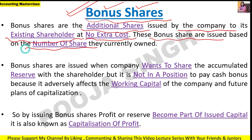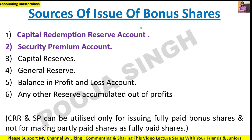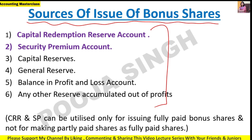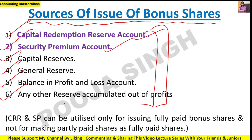This is about the number of shares. If you are a shareholder and the company has issued a bonus share, then you will receive shares in a proper proportion. The sources I told you are: capital redemption reserve account, security premium account, capital reserve, general reserve, balance of P&L account, or any other reserve accumulated out of profit.